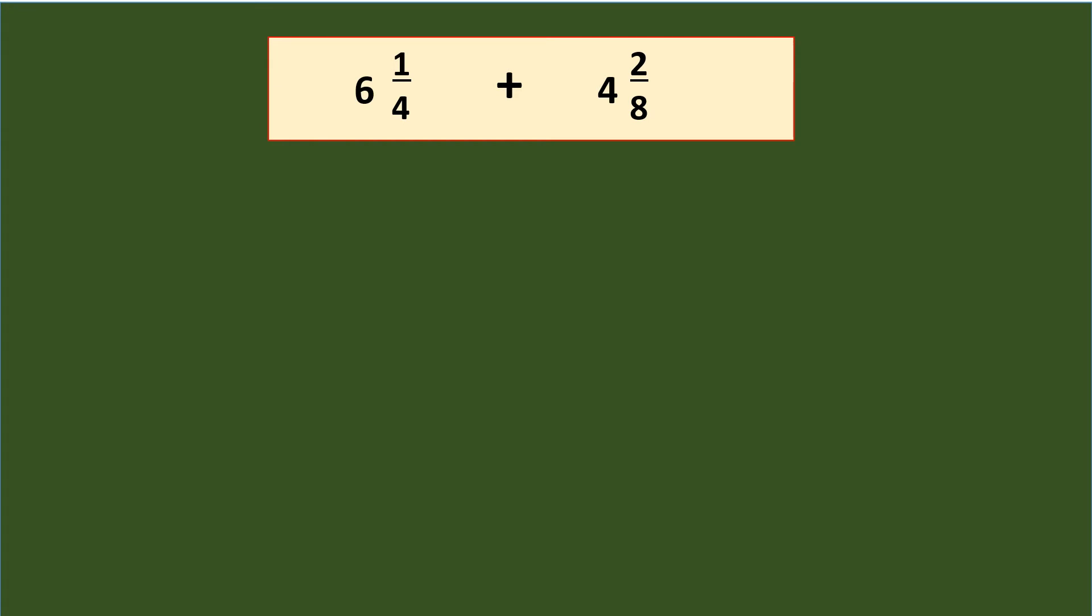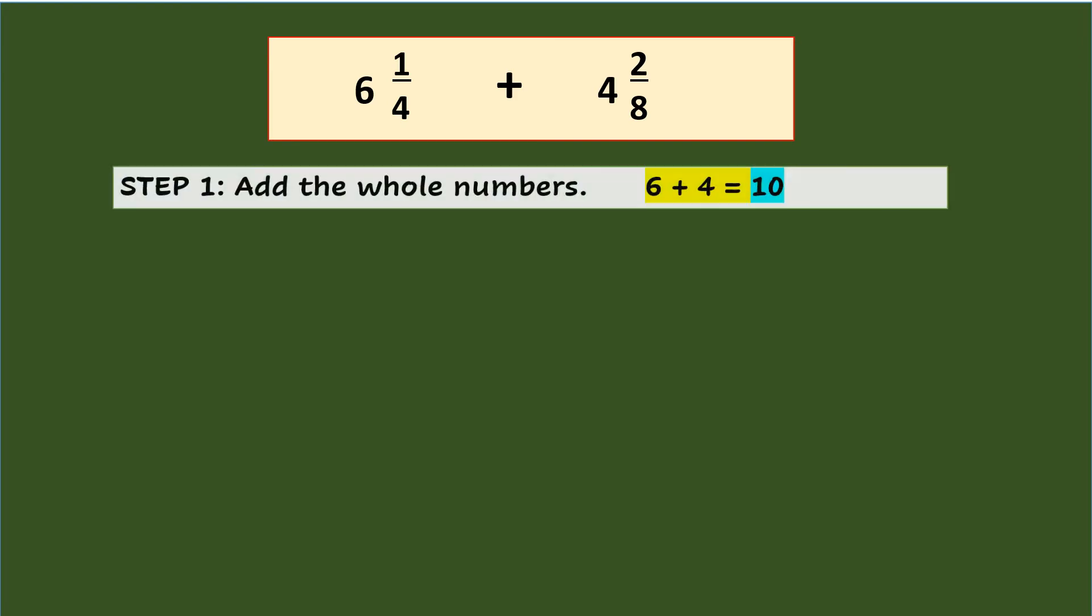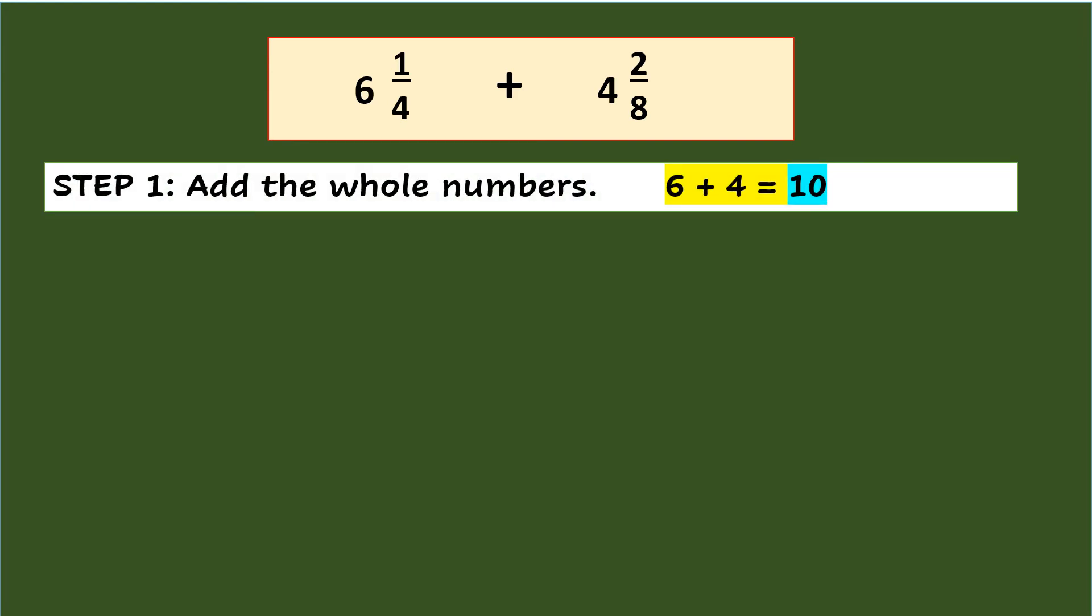Another way of adding mixed fractions in dissimilar form like 6 and 1 fourth plus 4 and 2 eighths is to apply the cross multiplication in fraction parts. So step 1 is add the whole numbers, 6 plus 4 equals 10.